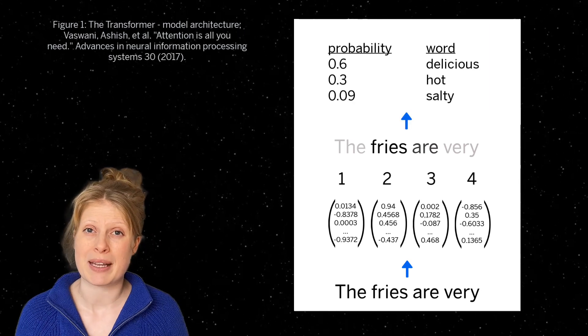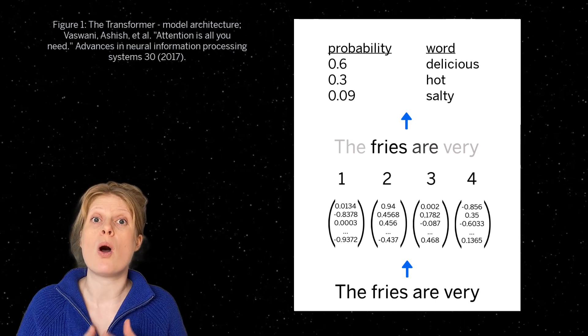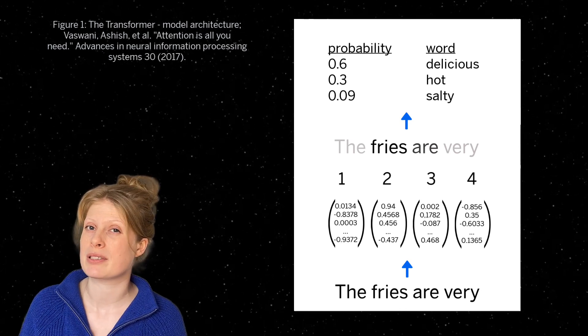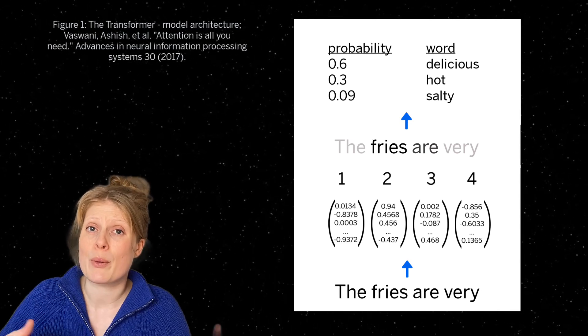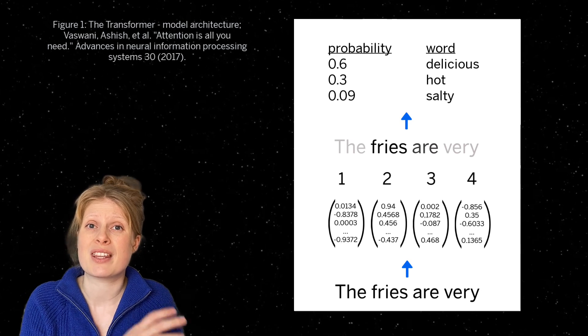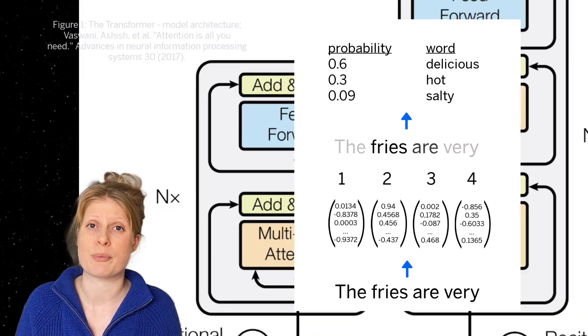With this self-attention mechanism, the transformer can capture dependencies between all words in a sequence, regardless of their position or distance, and that is huge because language models in the past would always forget the beginning of a sequence when they reach the end, even if it held important context information.